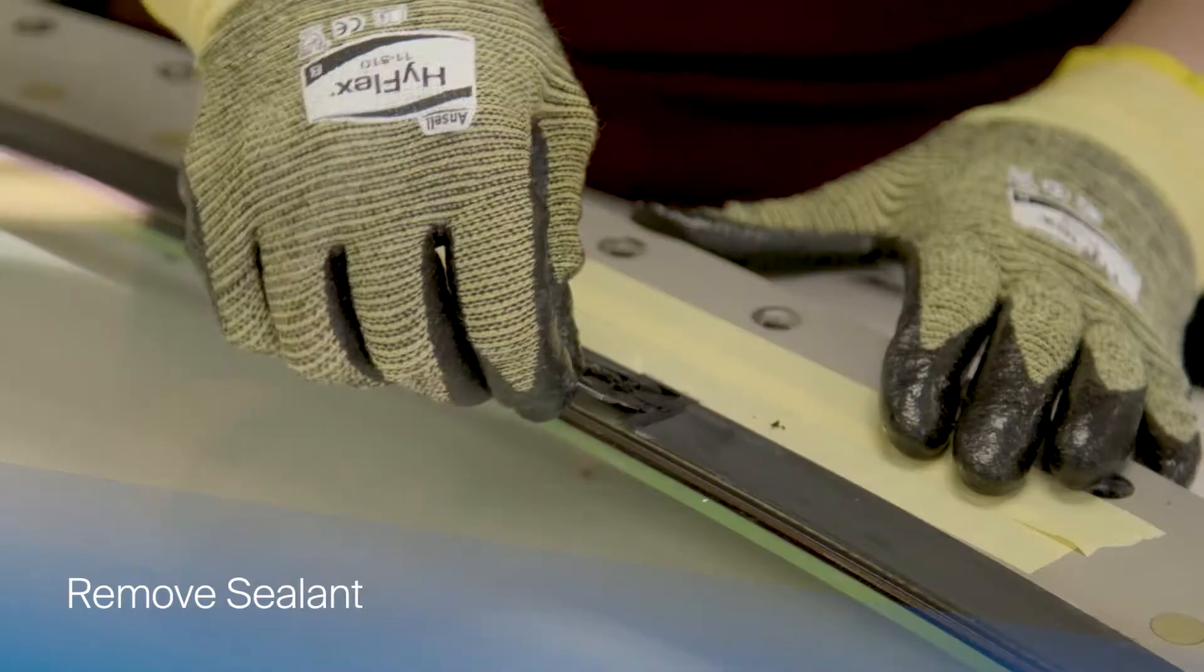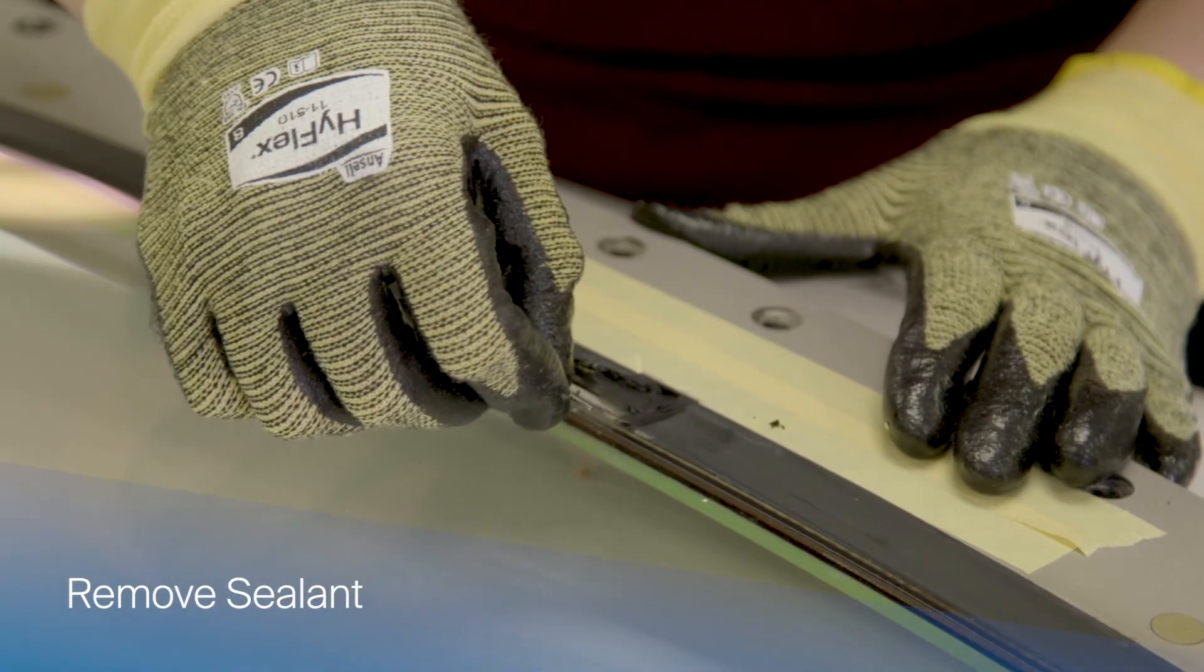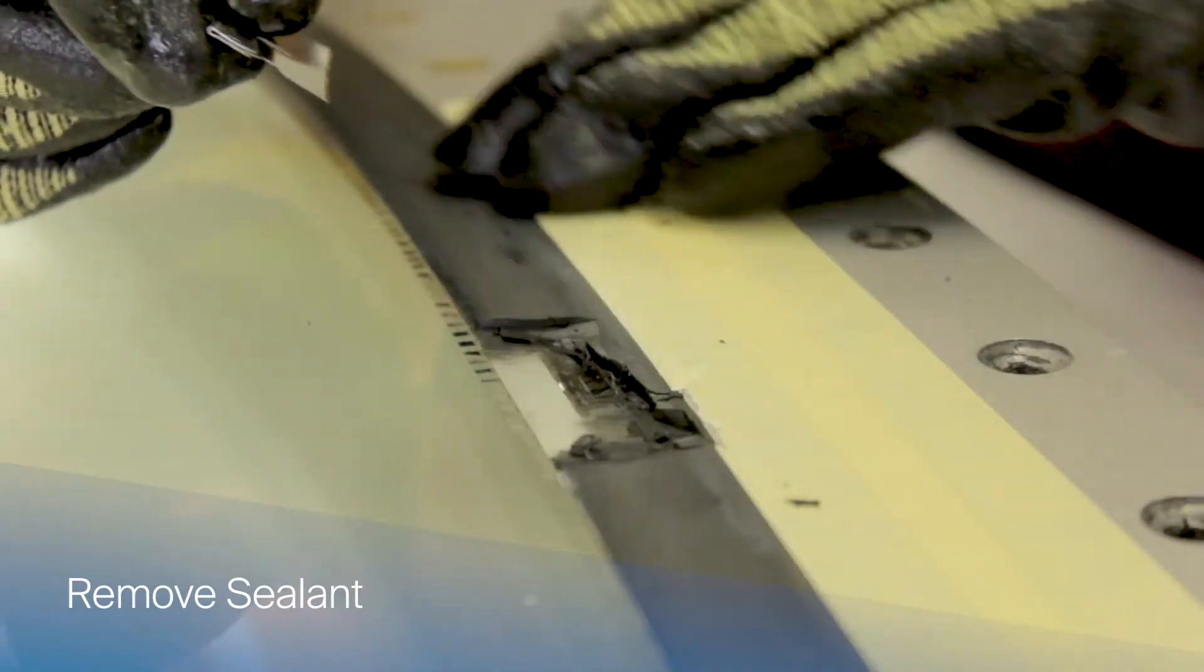Using a bent razor blade, remove the eroded sealant. Be extremely careful not to scratch the glass.